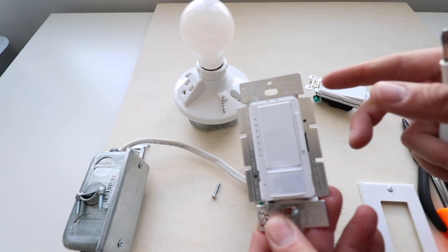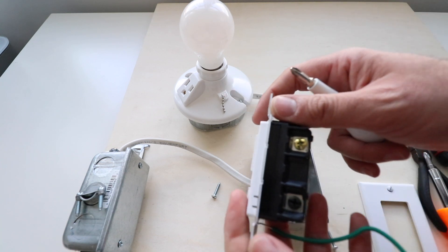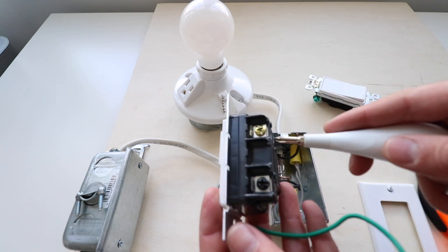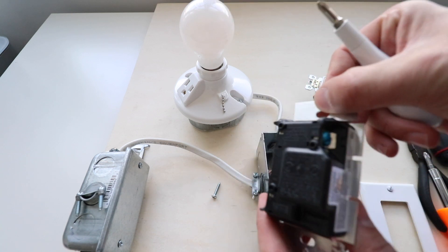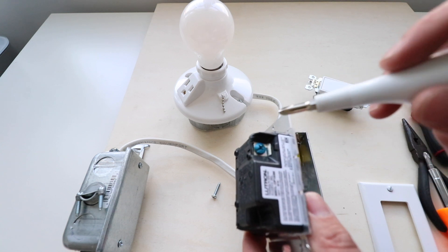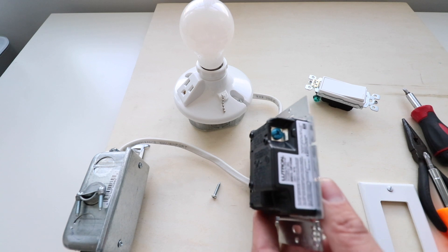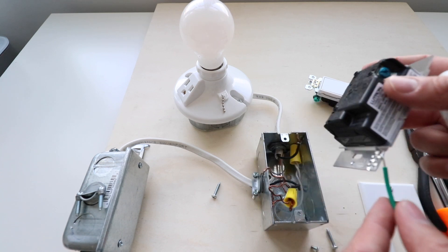So now on our motion sensor light switch this also only requires two wires so you've got your hot down here which is this black one and up here is the load wire going to the light bulb and then over here you're going to see this extra blue wire. What is that? Well that extra blue wire is actually for a three-way switch application so this will also work in a three-way switch application but you don't need to use it if you're not going to use it in a three-way switch application.